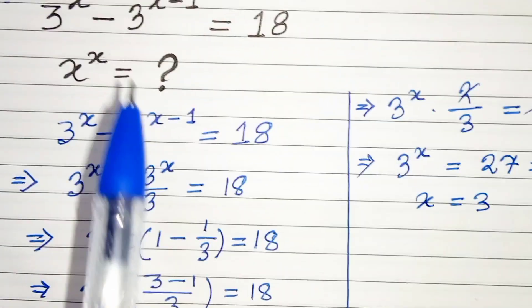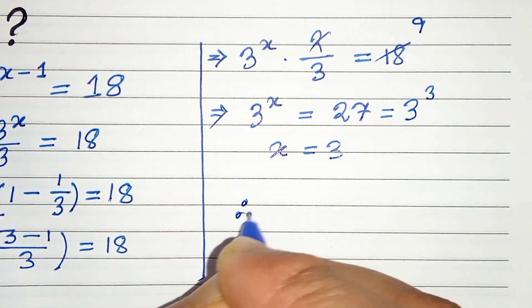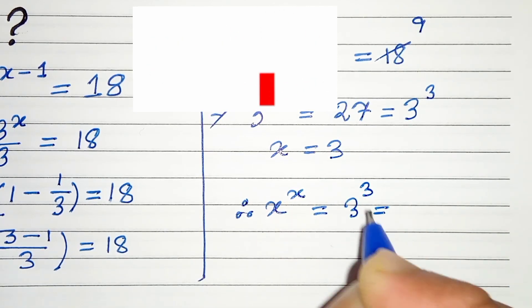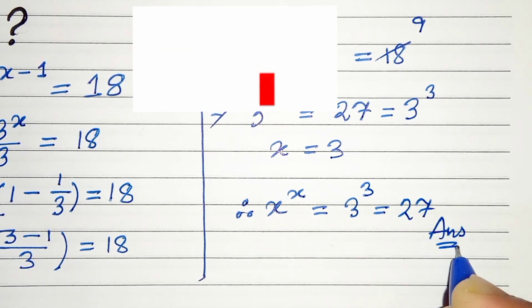But we have to find x raised to the power x. Therefore x to the power x equals 3 to the power 3, which is 3 cube. That is 27. This is our solution. Thanks for watching.